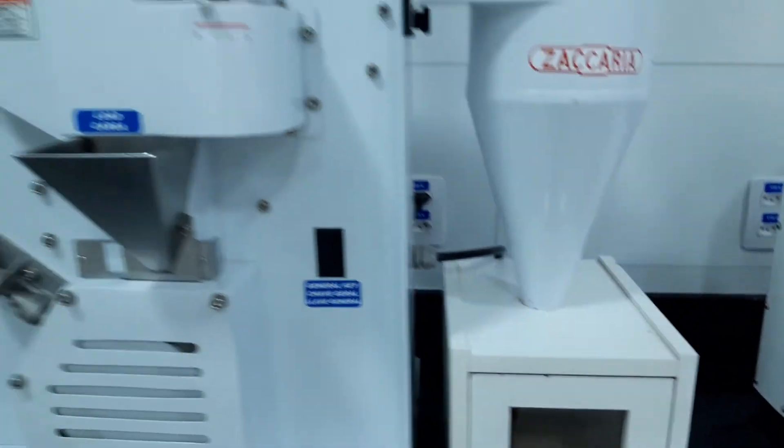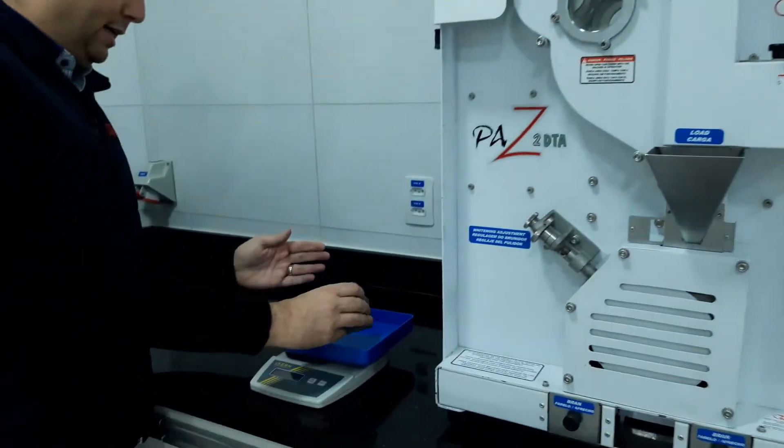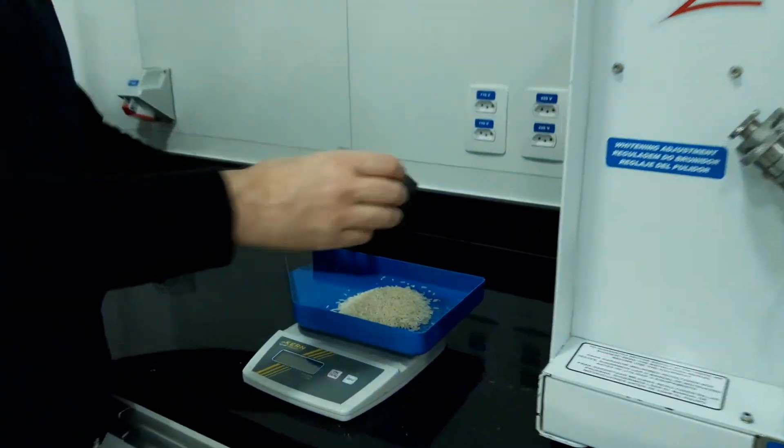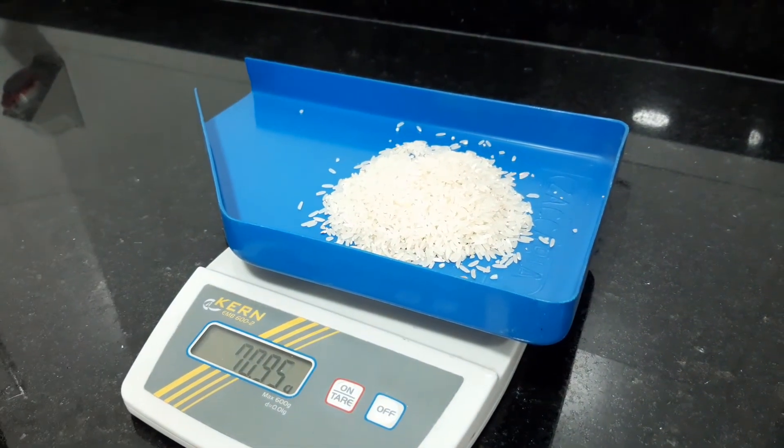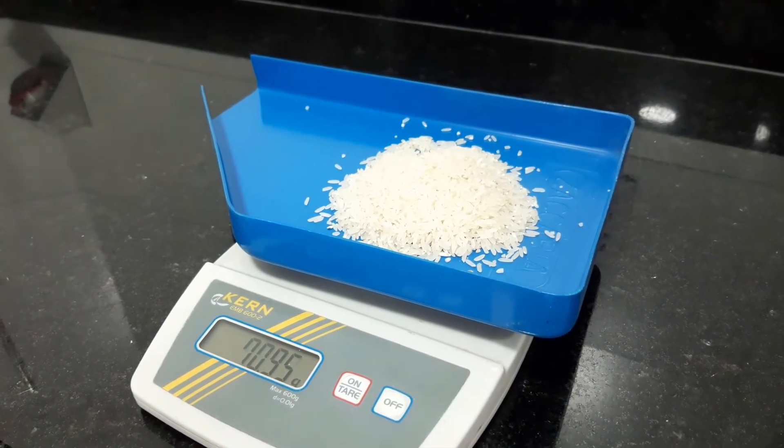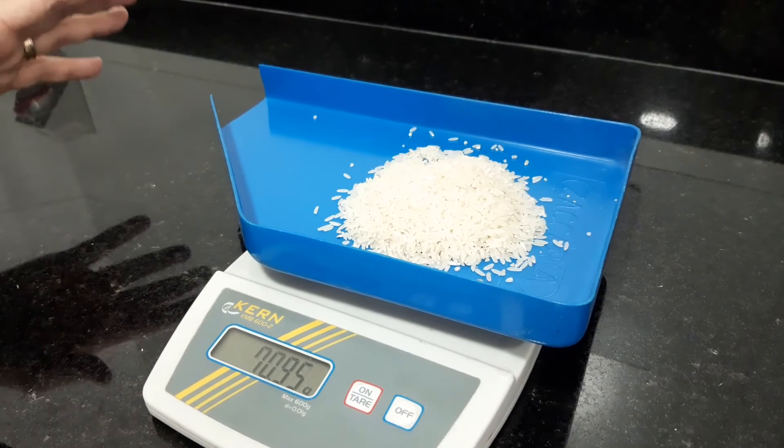Now with the white rice we will measure again and see the yield of the rice. From this rice we have 70 grams point 95 of white rice.